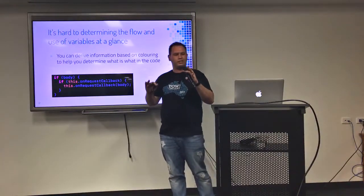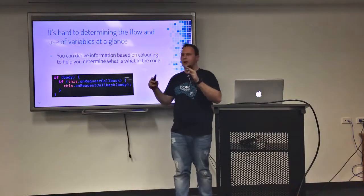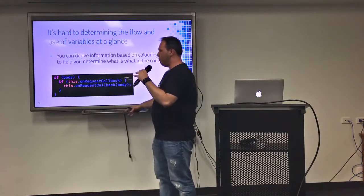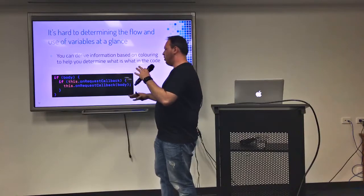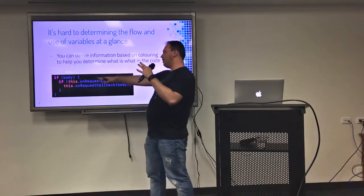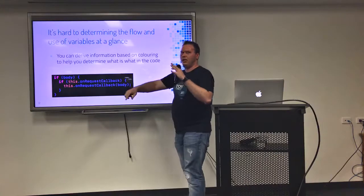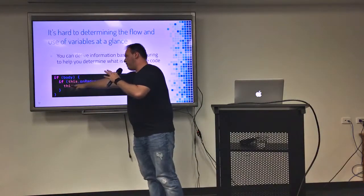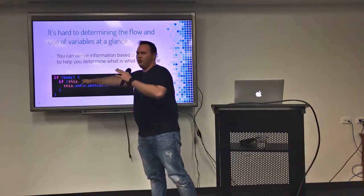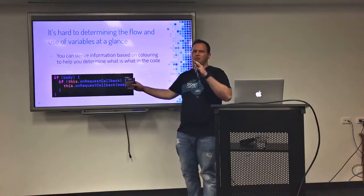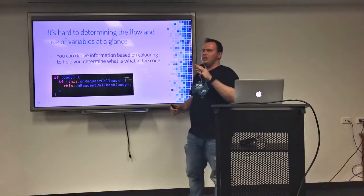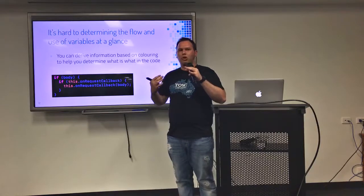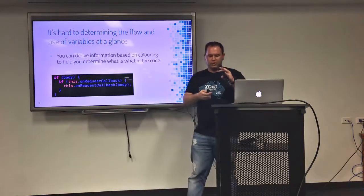One thing I did find is it's very hard to understand the flow and the variables at a glance. Even just at a glance, you kind of have a rough idea of what's going on with syntax coloring. All of your methods — you can tell it's a method because you've got 'this' and that's colored a kind of salmon color. It's the kind of thing you don't consciously think about, but it's in your mind.